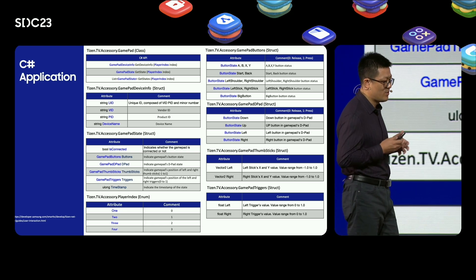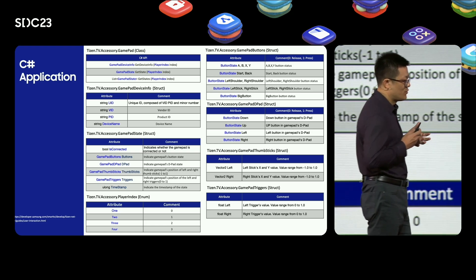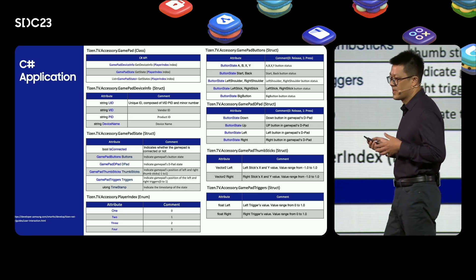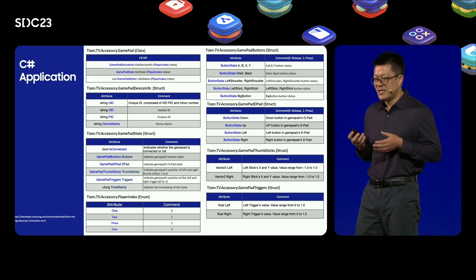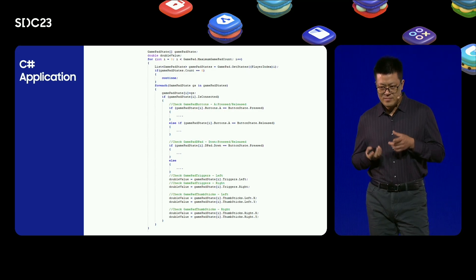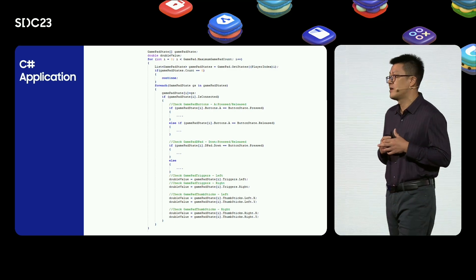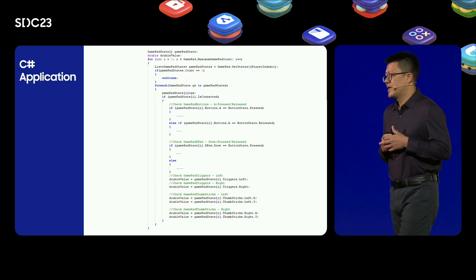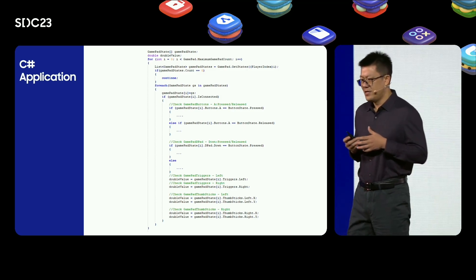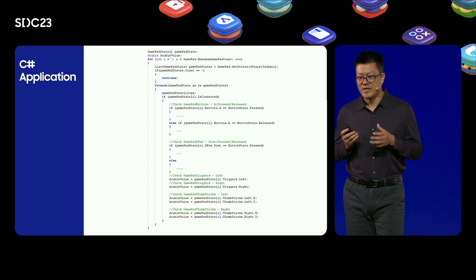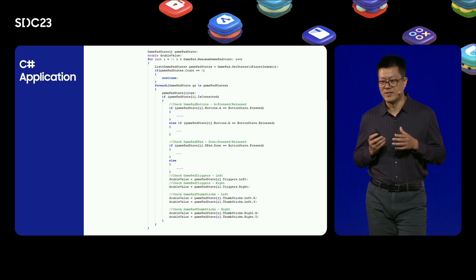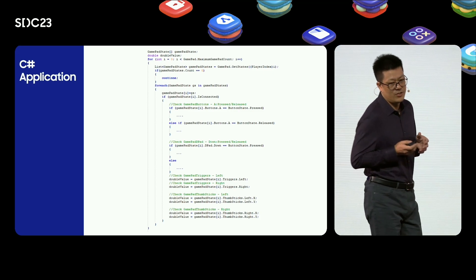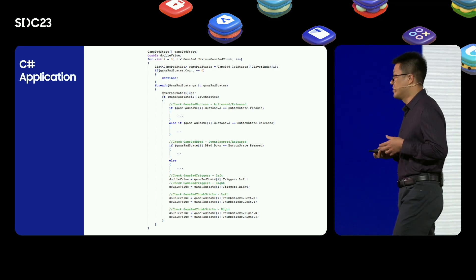GetDeviceInfo is used to get gamepad-related device info including vendor ID, product ID, device name, and unique ID. GetState and GetStates are both used to get button status of the gamepad. The difference is that GetStates can be used to get a list of GamePad state. Compared with GetState, GetStates can achieve better performance if your app needs to get trigger or joystick status in time. In this example, we use the GetStates method of the GamePad class to retrieve multiple GamePad state instances for the same gamepad. We then check if the gamepad is connected by checking the IsConnected property of each GamePad state, and retrieve the current status of the buttons, D-pad, triggers, and joysticks using their respective properties.